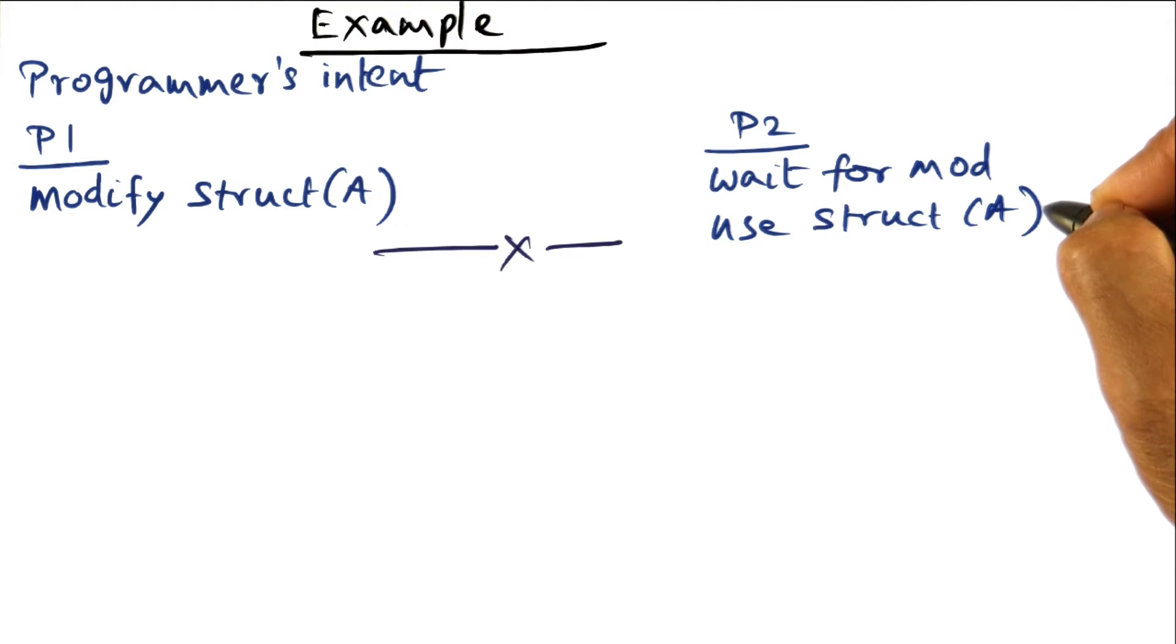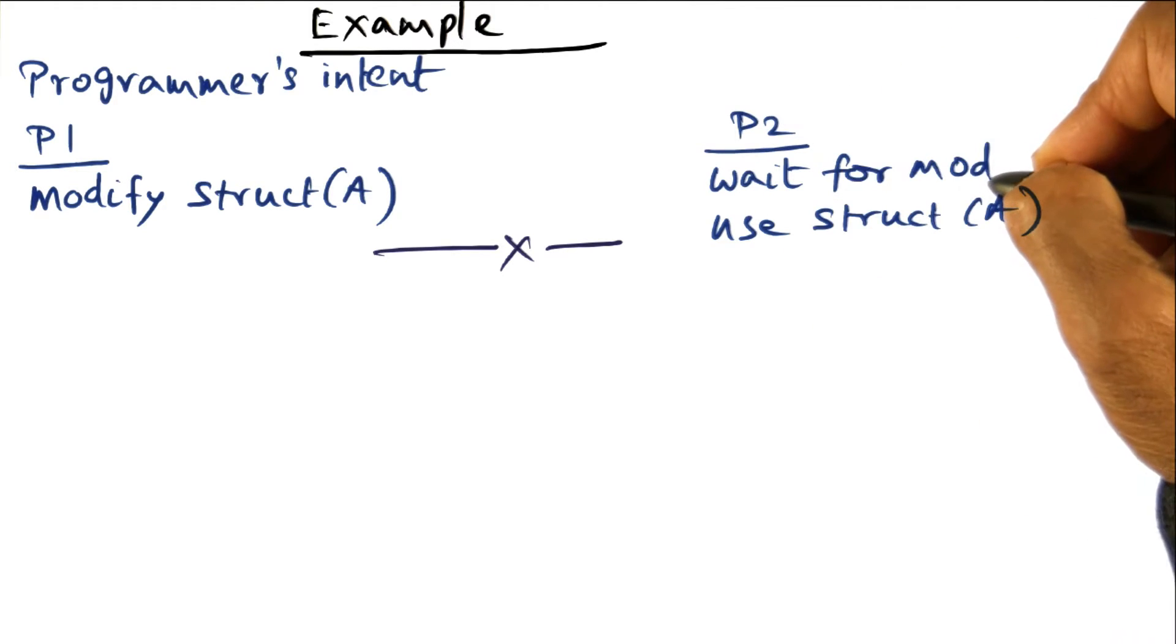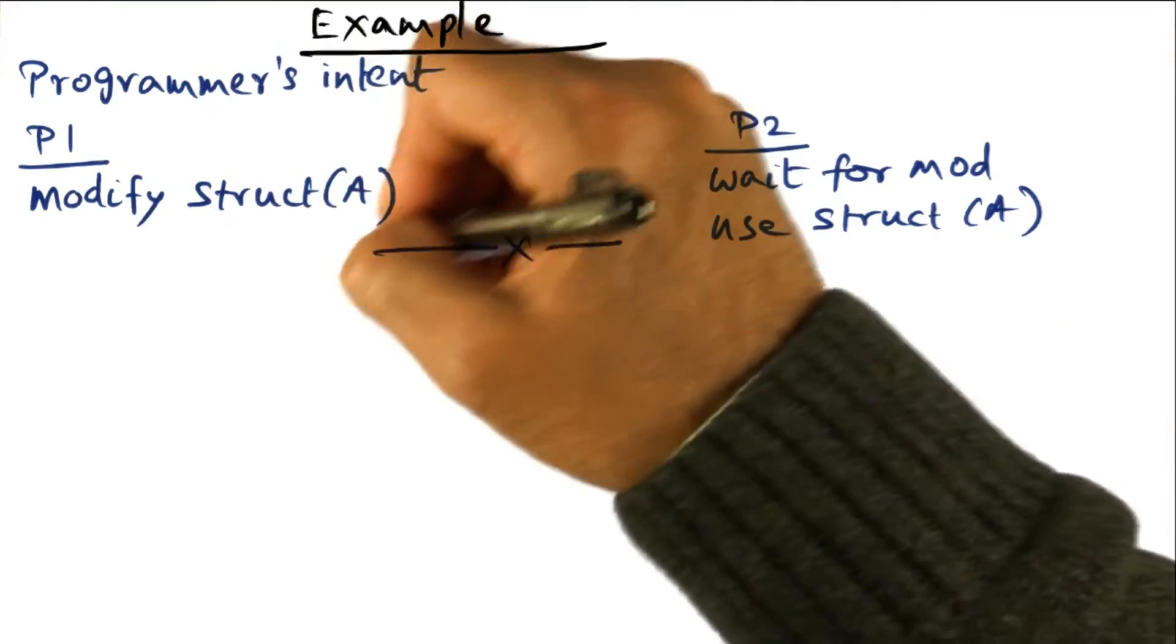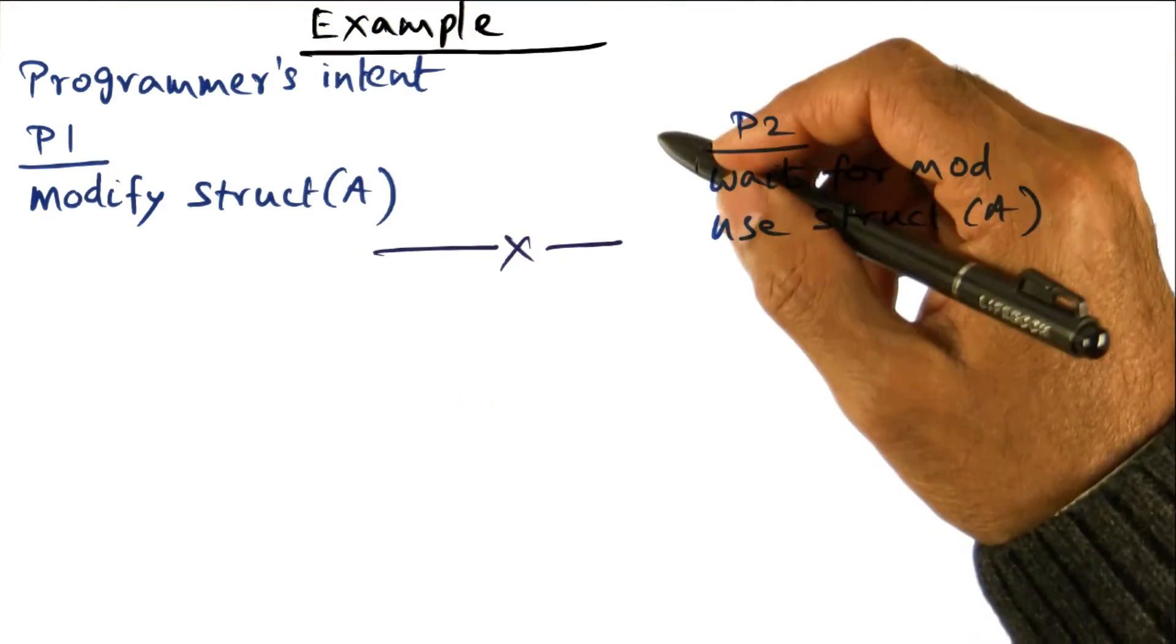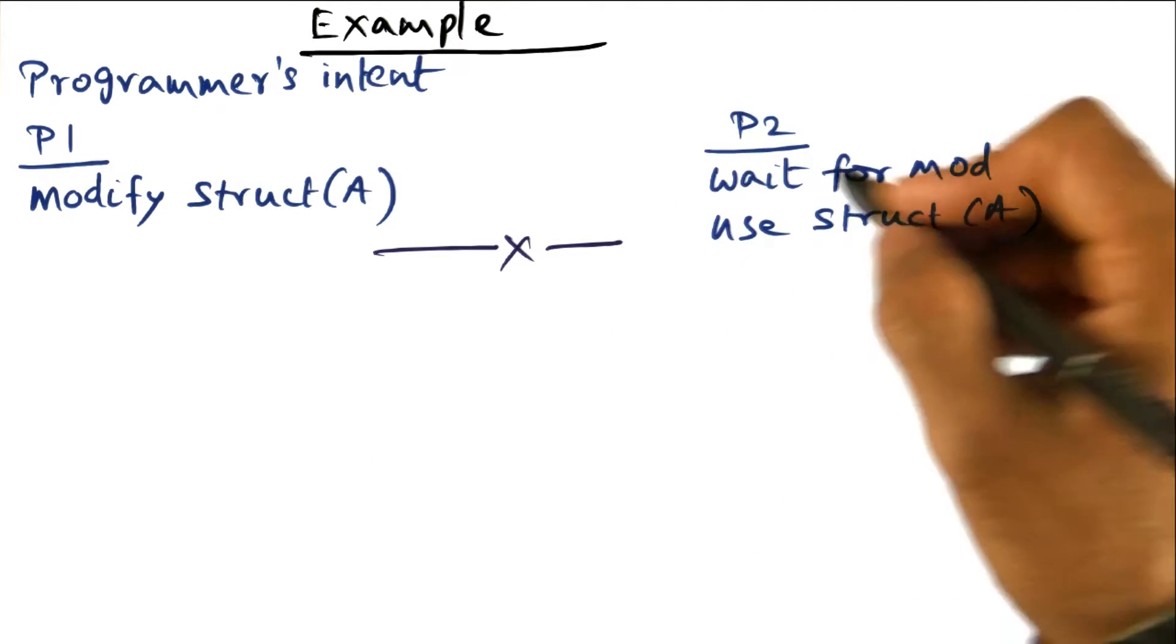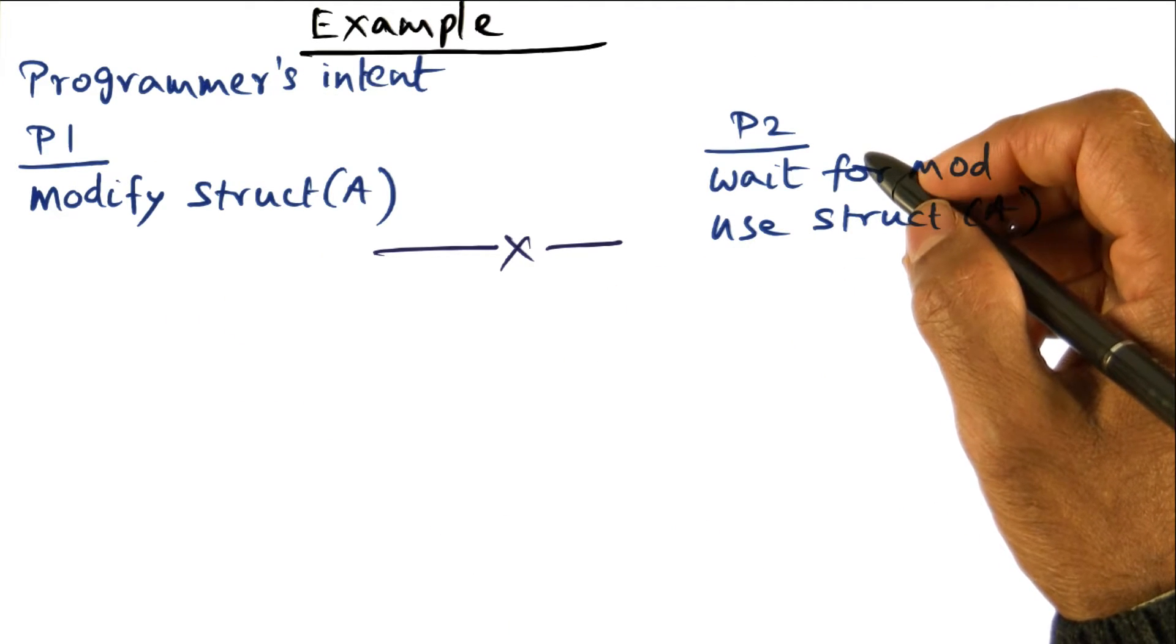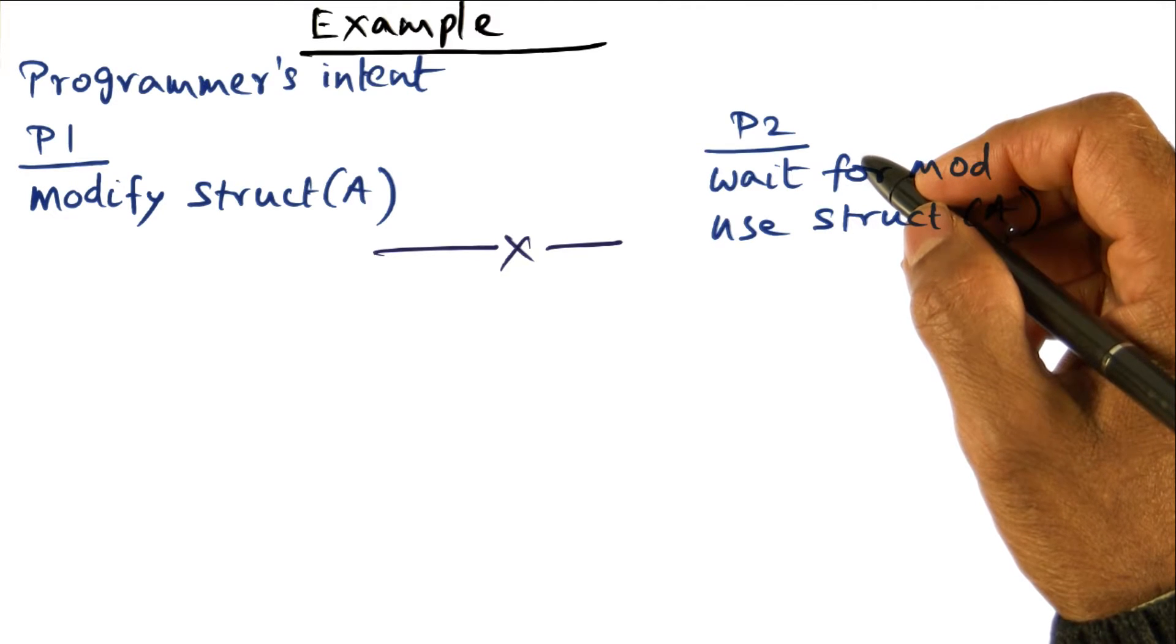This is the programmer's intent. P2 is going to wait for the modification and use it, and this guy is modifying that particular structure A. Of course these are running on different processors, and therefore we don't know who may be getting to their code first.